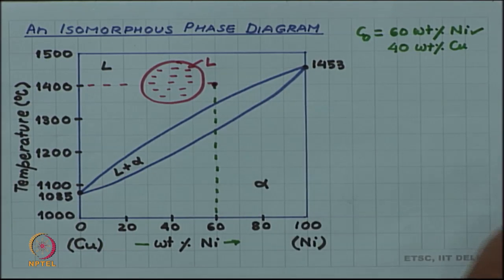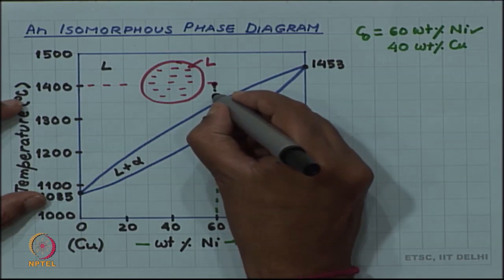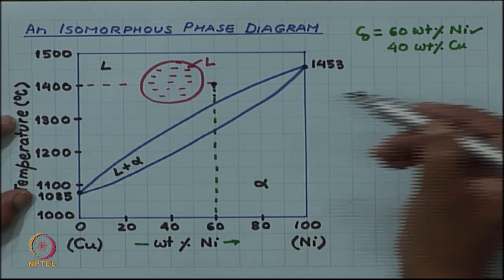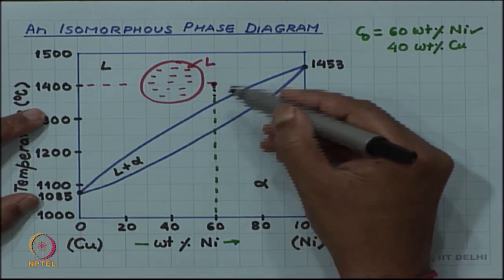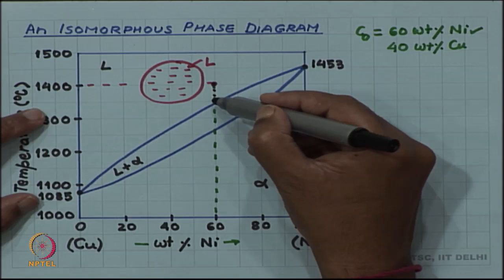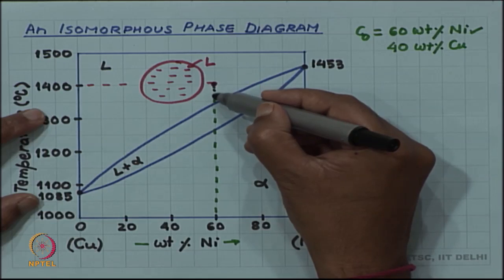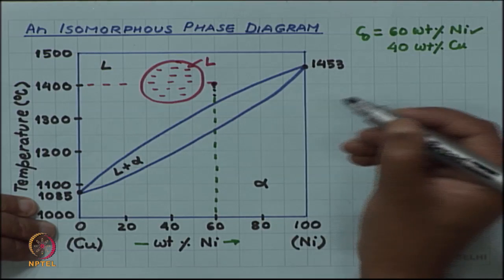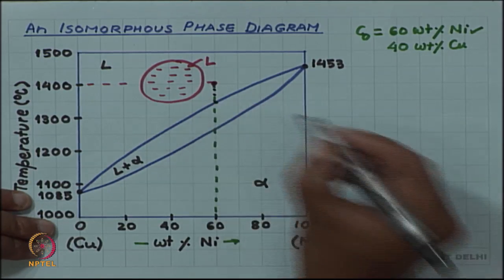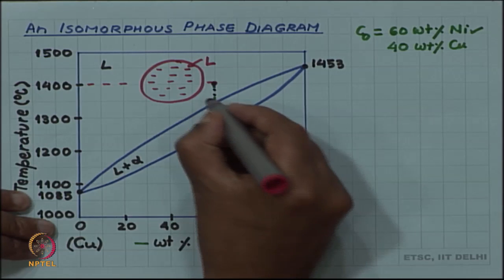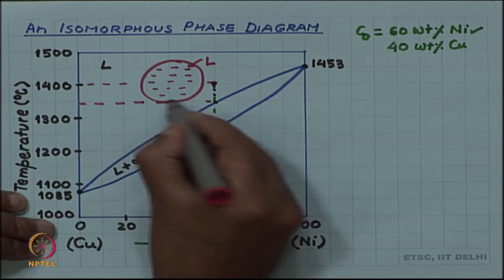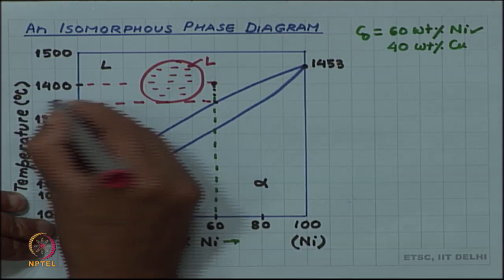As you cool the alloy, it will show changes due to cooling — for example, thermal contraction, so the volume of the liquid will reduce. Liquids generally increase in viscosity as temperature lowers. Such physical properties will change, but there will be no phase change until you reach the liquidus boundary. The liquidus boundary is reached at a certain temperature — the liquidus temperature — which in this diagram is approximately 1500 degrees Celsius.